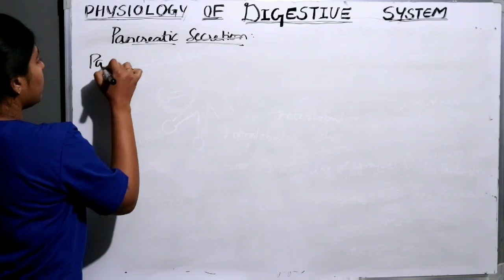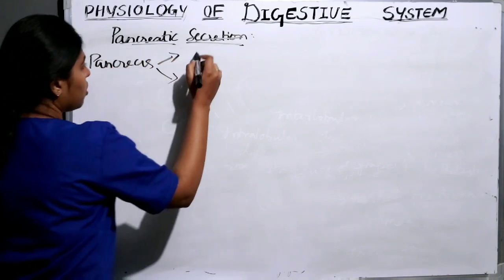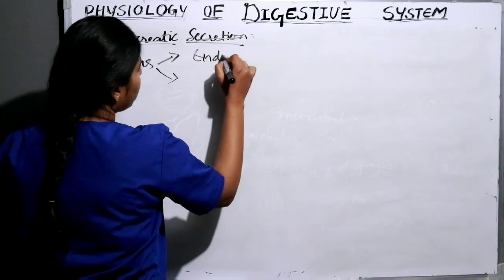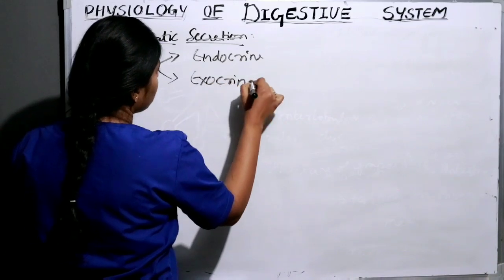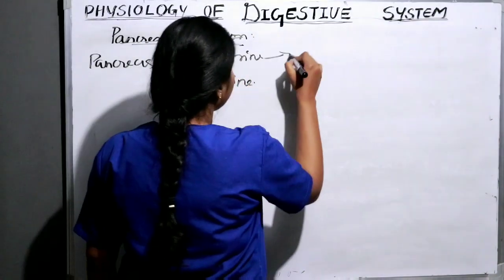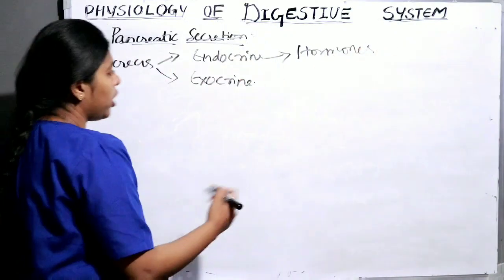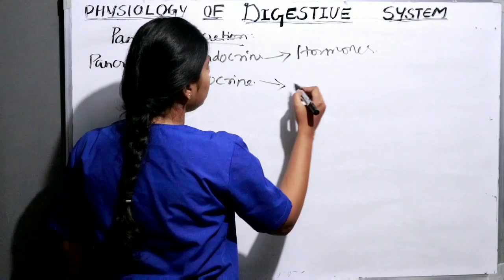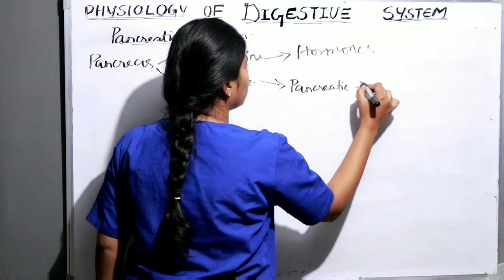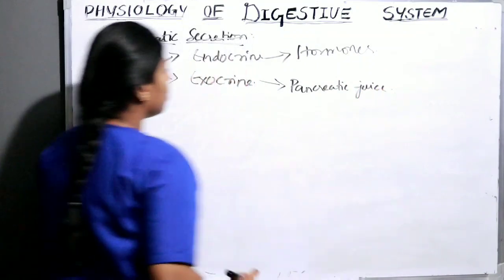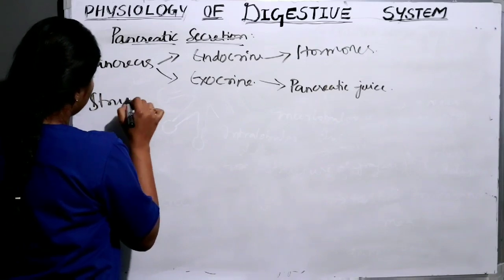The pancreas contains both endocrine and exocrine activity. In the endocrine, it deals with the secretion of hormones, which we will discuss in endocrinology. In the exocrine, it deals with the secretion of pancreatic juice. We will now discuss about the structure.